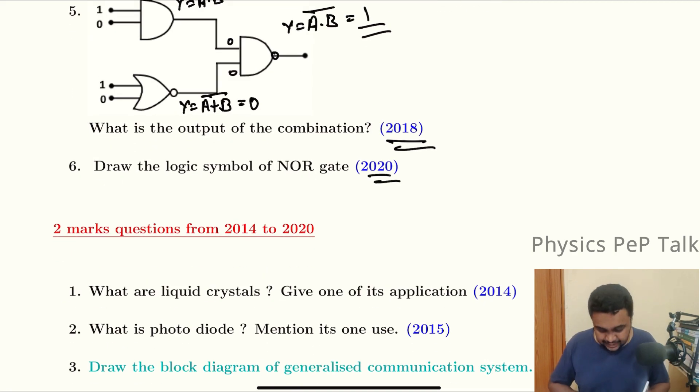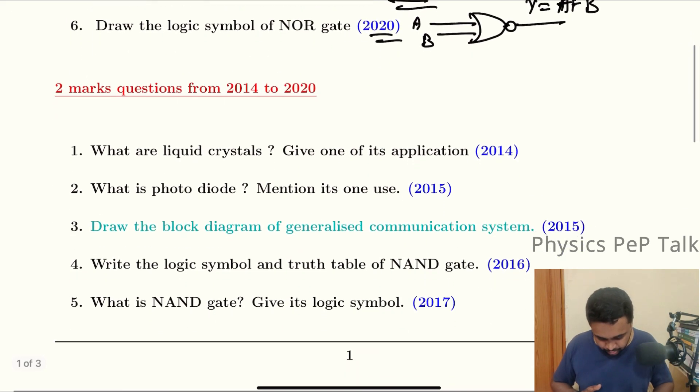In 2020, draw the logic symbol of NOR gate. What is NOR gate? A and B are the inputs. Y equals A plus B whole bar is the required logical expression for NOR gate.